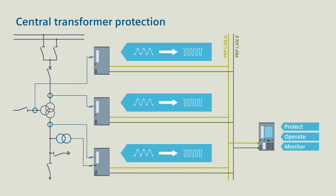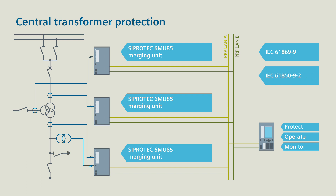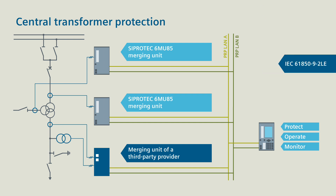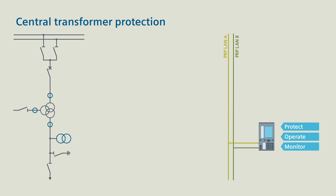With CProtek 5 merging units, the digitalized measured values can be transferred in compliance with the IEC 61869 Part 9 and IEC 61850 Part 9-2 standards. When the merging units of other providers are used, you can shift to the IEC 61850 Part 9-2 light edition standard if required.